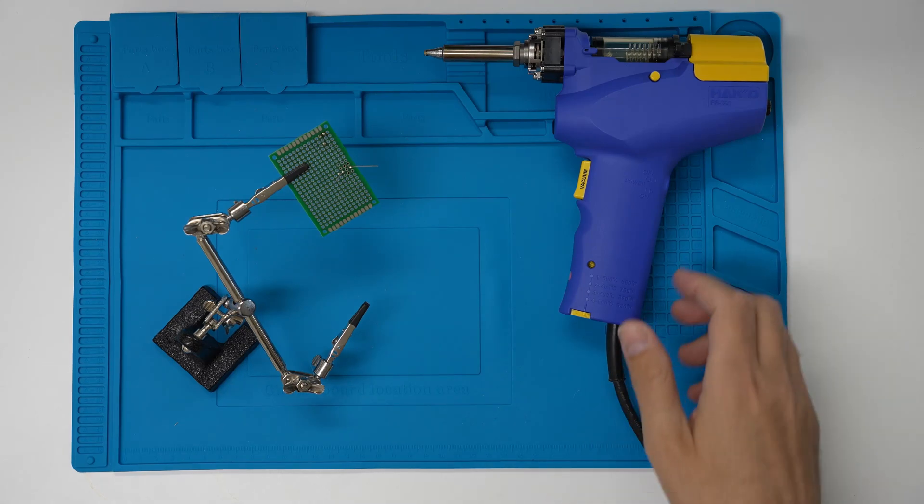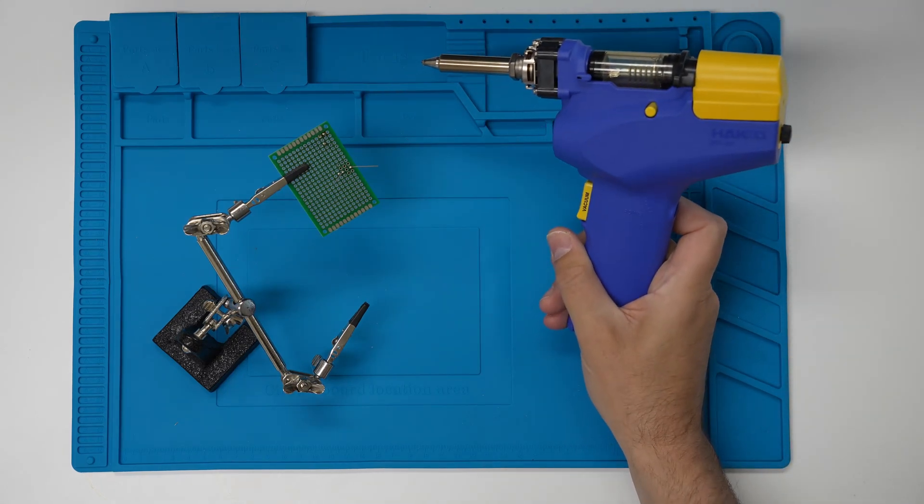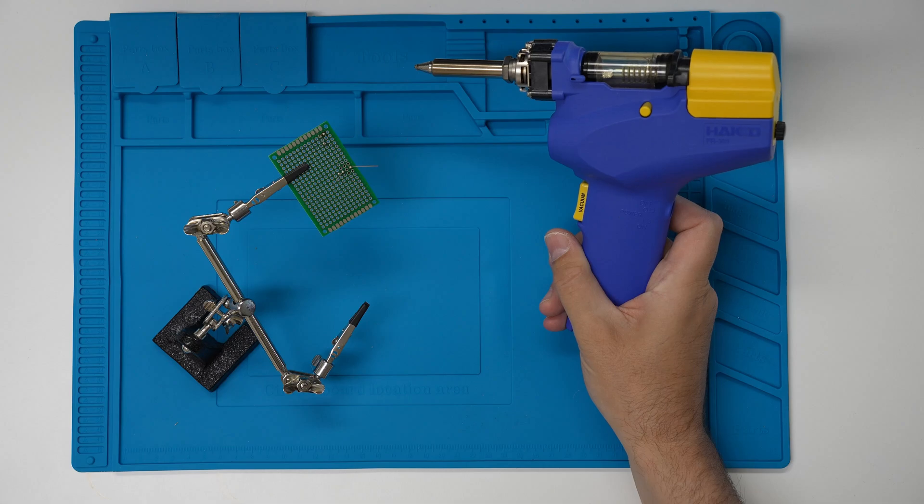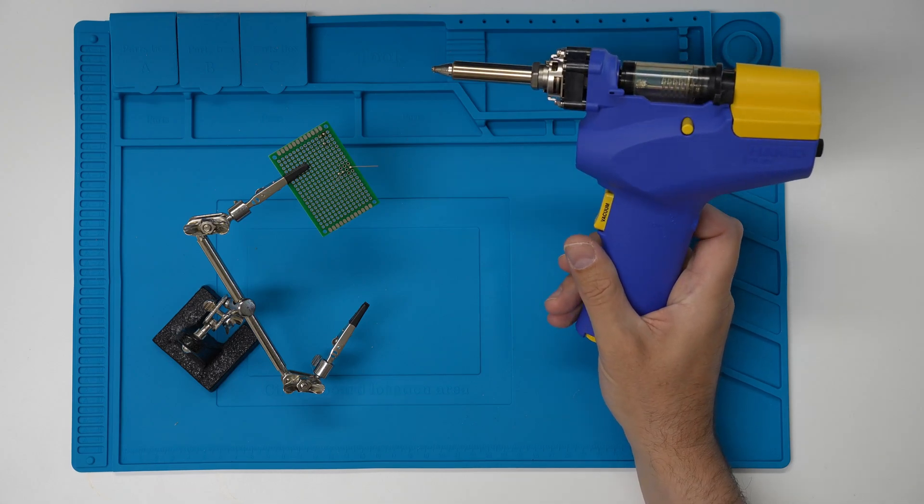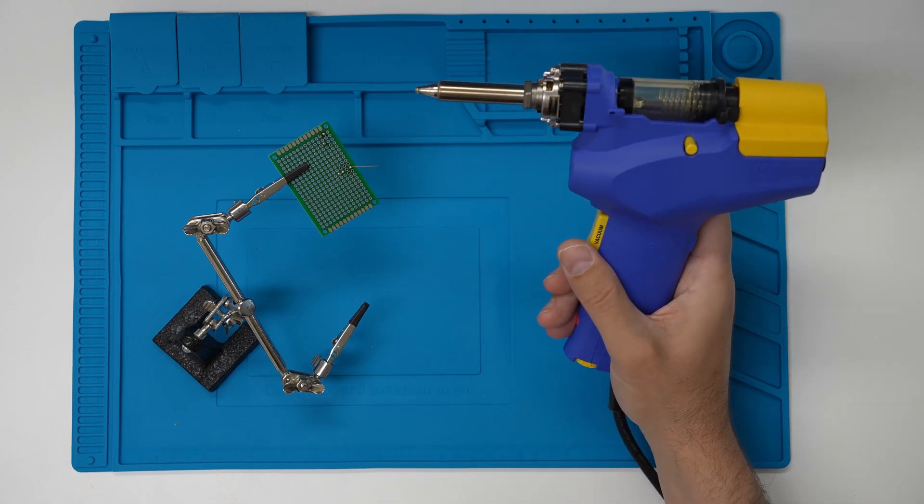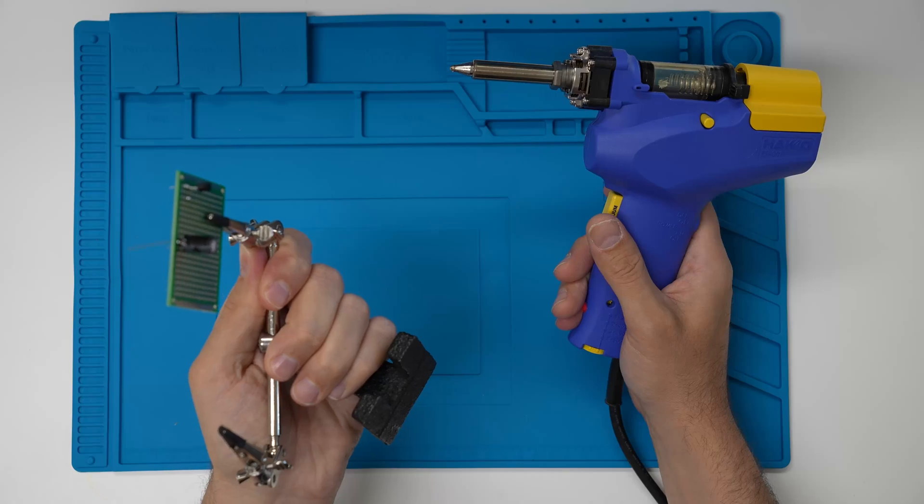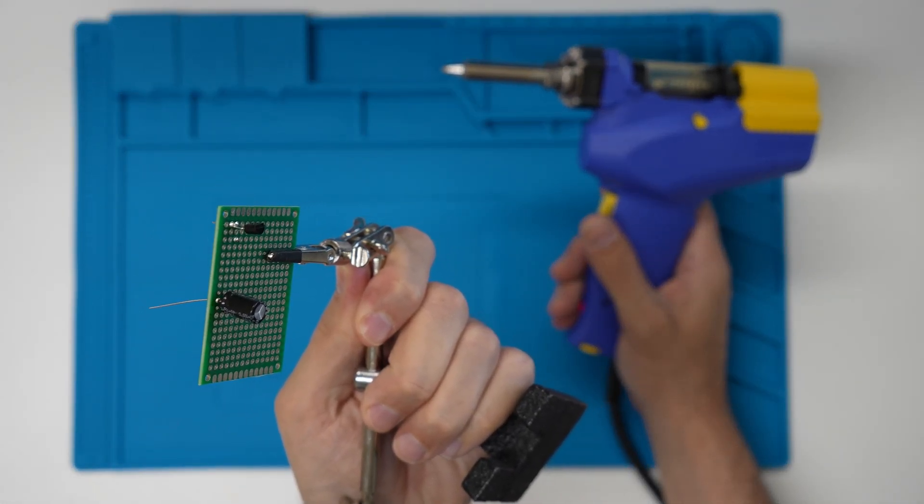Welcome back to the lab. Today we are going to take a look at cleaning the Hakko FR301 desoldering tool. So I was trying to desolder these components from this board. As you can see there's two components here and it wasn't working.